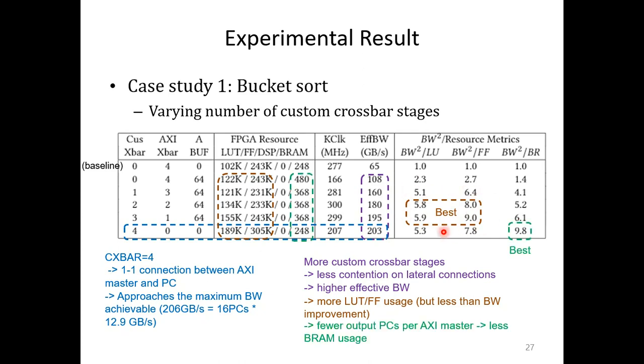In terms of BRAM, having more custom crossbar stages decreases the number of output PCs being accessed per AXI master, so the BRAM usage may reduce depending on the minimum BRAM depth. In this particular bucket sort application, we don't need to differentiate the data as long as they are sent to the correct bucket, so we made application-specific optimization of reusing the built-in burst buffer and further reduce the BRAM usage. As a result, the best design point in terms of bandwidth squared over BRAM is reached when the built-in crossbar is fully replaced with the custom crossbar.